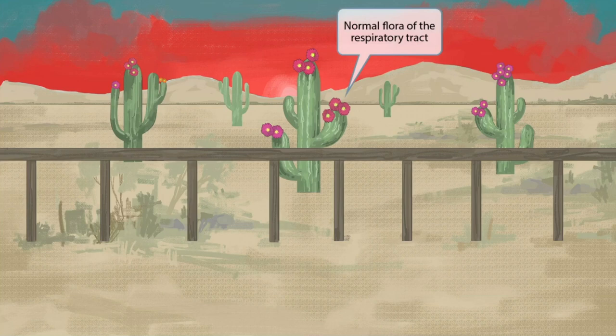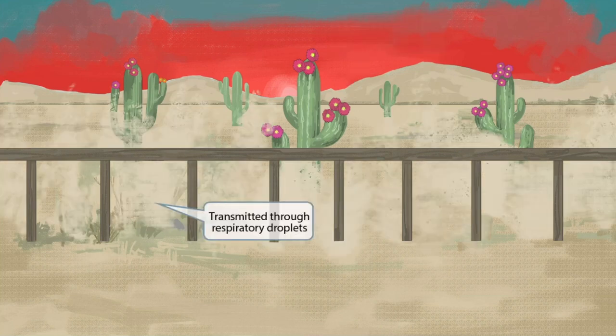Notice that we've added some flowers on top of the cacti. The flowers are used as a symbol for flora, and the fact that they're up high on top of the cacti should help you remember that Moraxella is part of the normal flora of the respiratory tract. We've also added some dusty mist to the scene. Mist is a cloud of tiny water droplets, used as a symbol to represent transmission through respiratory droplets. So Moraxella is transmitted through respiratory droplets.